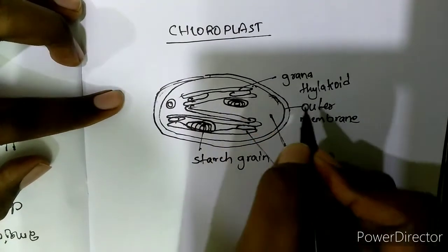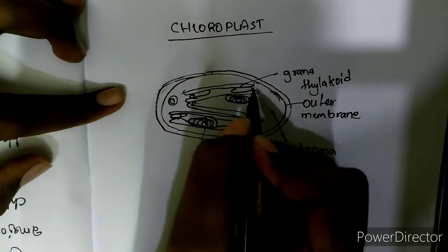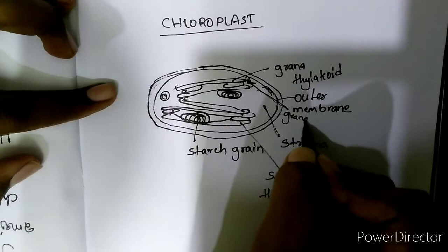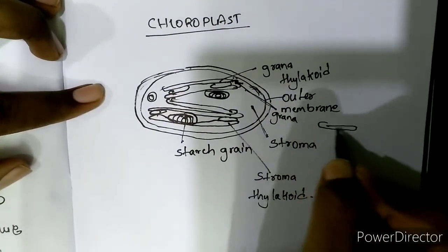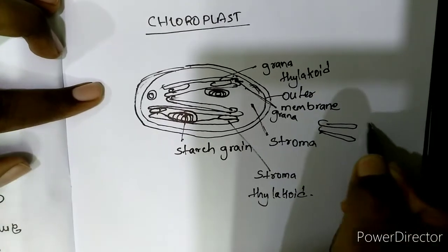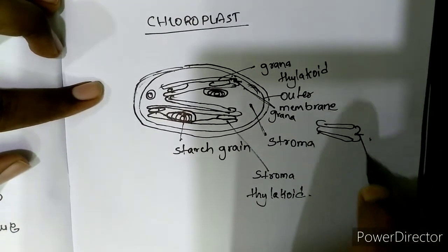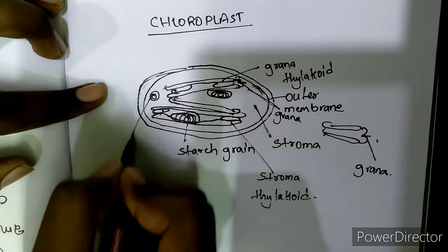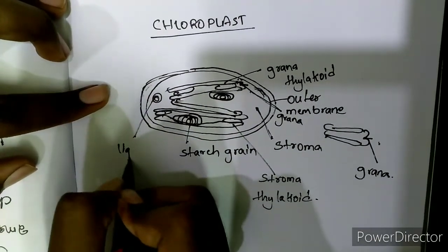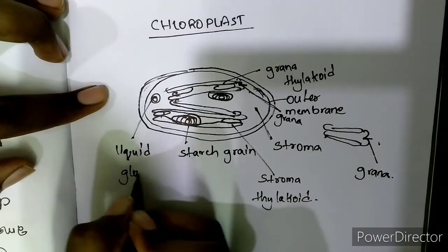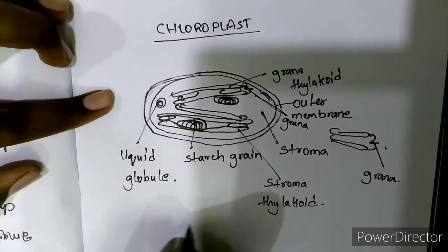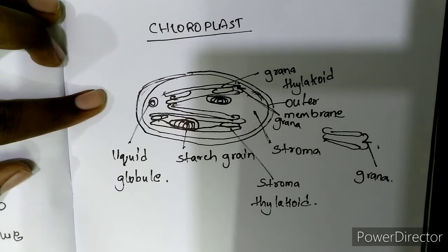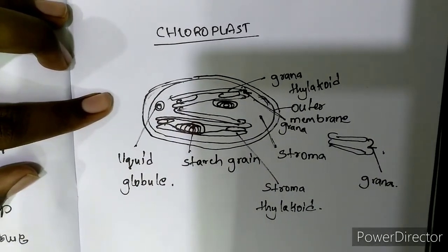In front of the thylakoid, draw a disc-shaped structure and name it as grana. On top of the thylakoid, draw similarly and label it as grana. Also draw one circle and name it as lipid globule. These are the labelings of the diagram. I hope you like this video — don't forget to subscribe to my YouTube channel. Thank you for watching.